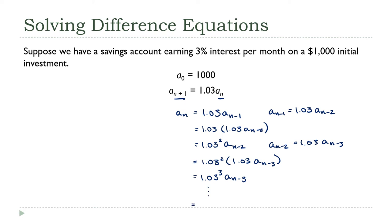I can keep doing this, and eventually I'm going to get all the way down to a₀ — that's the beginning, where my chain ends because I can't go any further back. When I do, I get 1.03ⁿ·a₀, and that's the formula I was looking for.